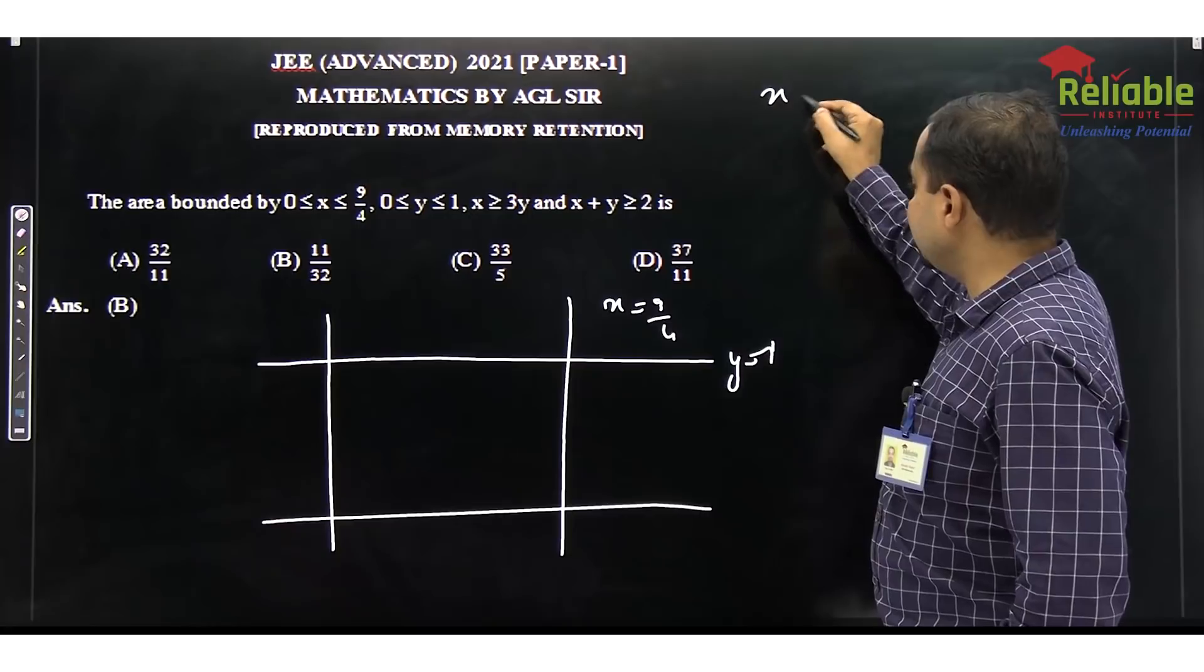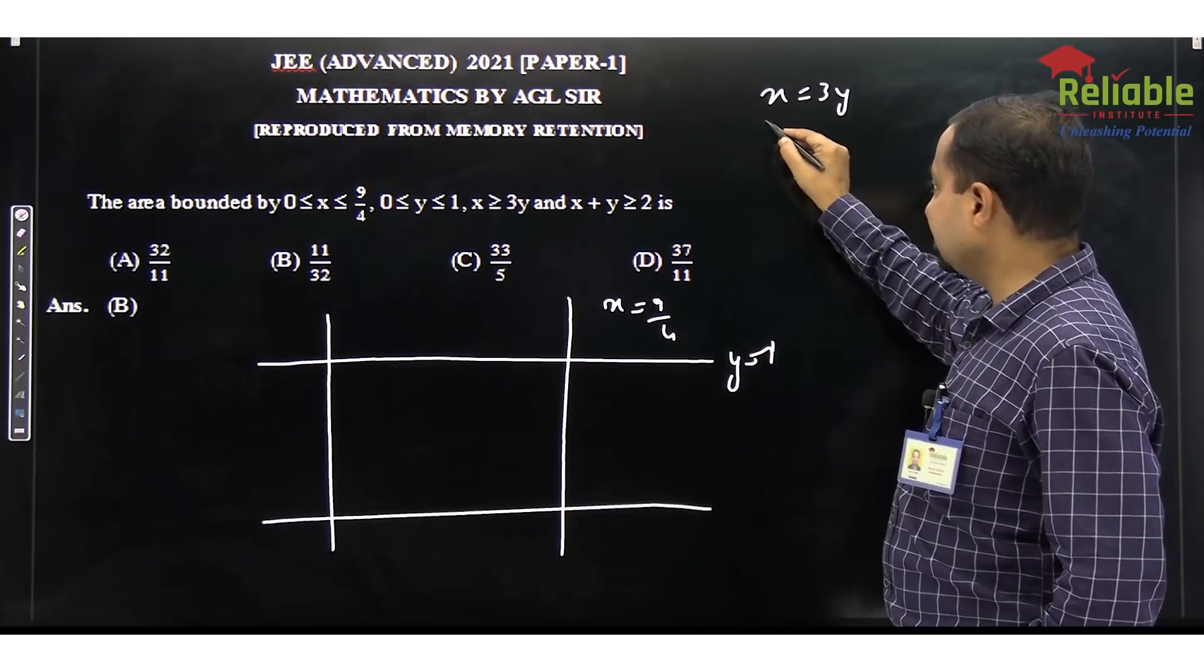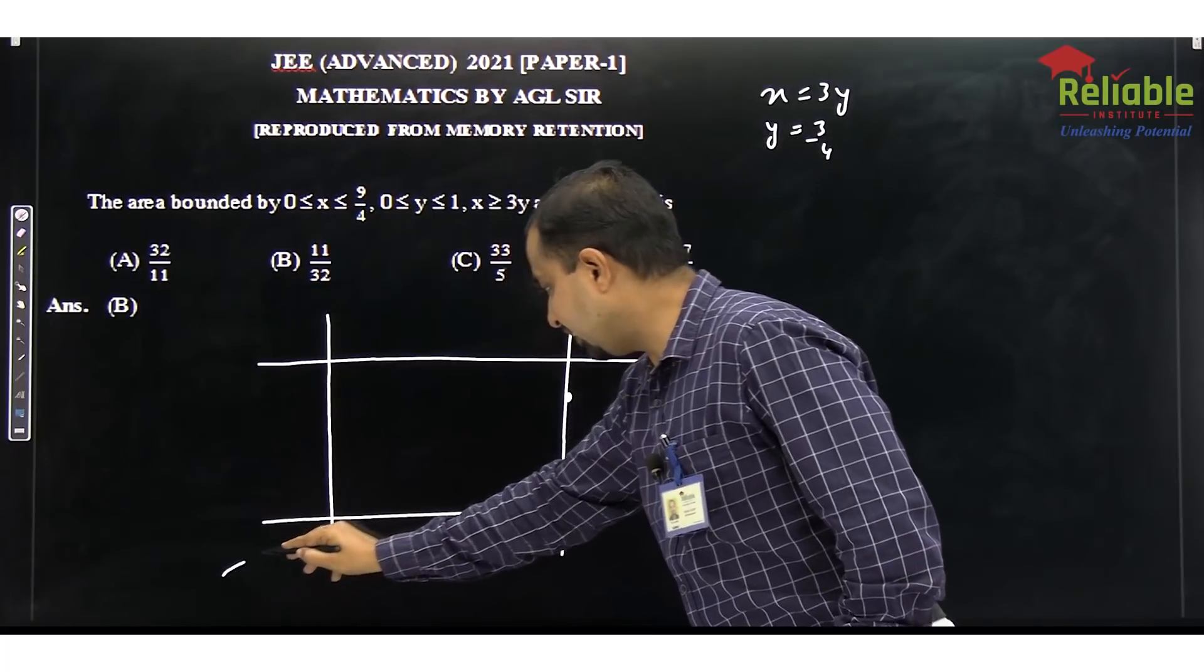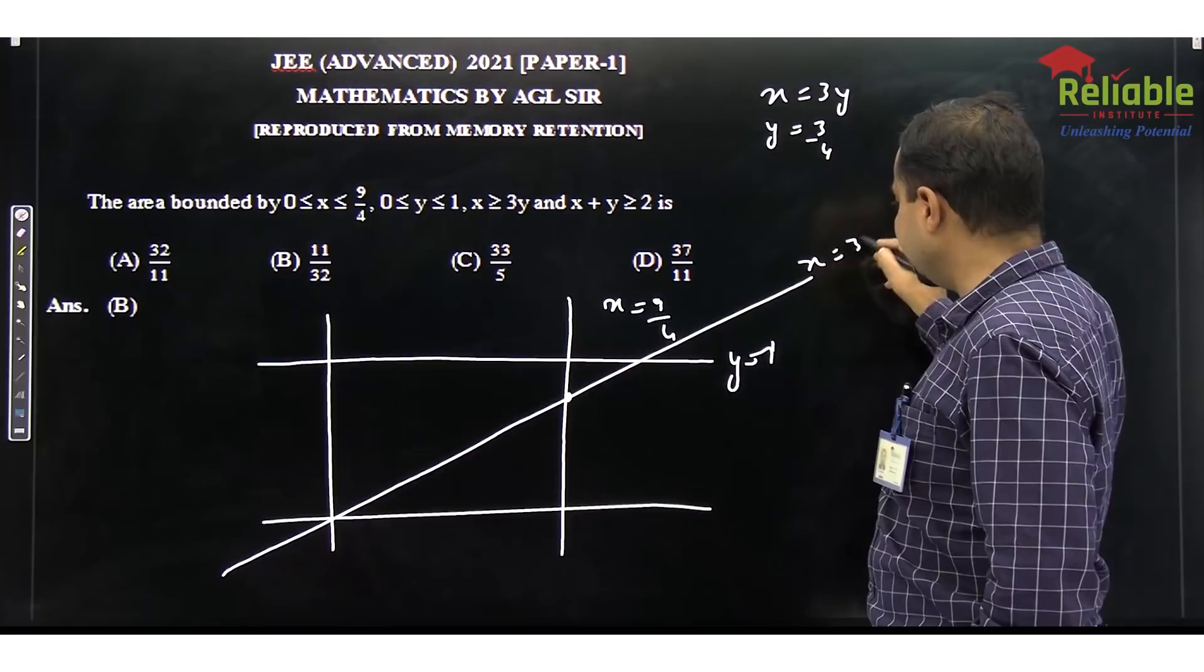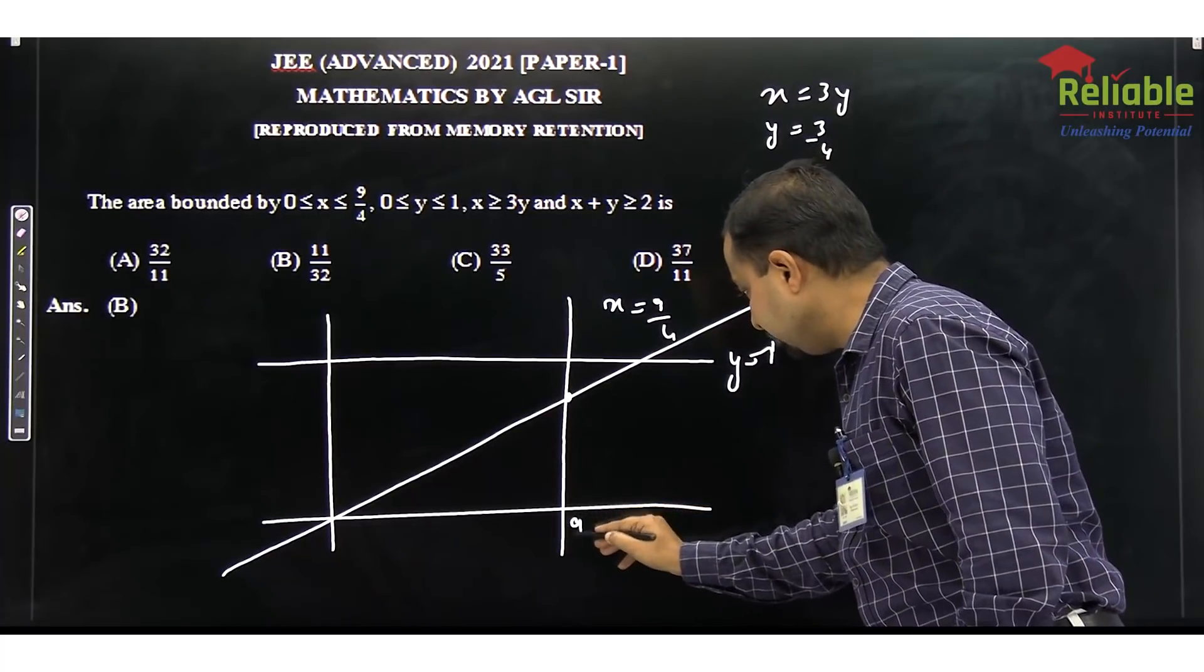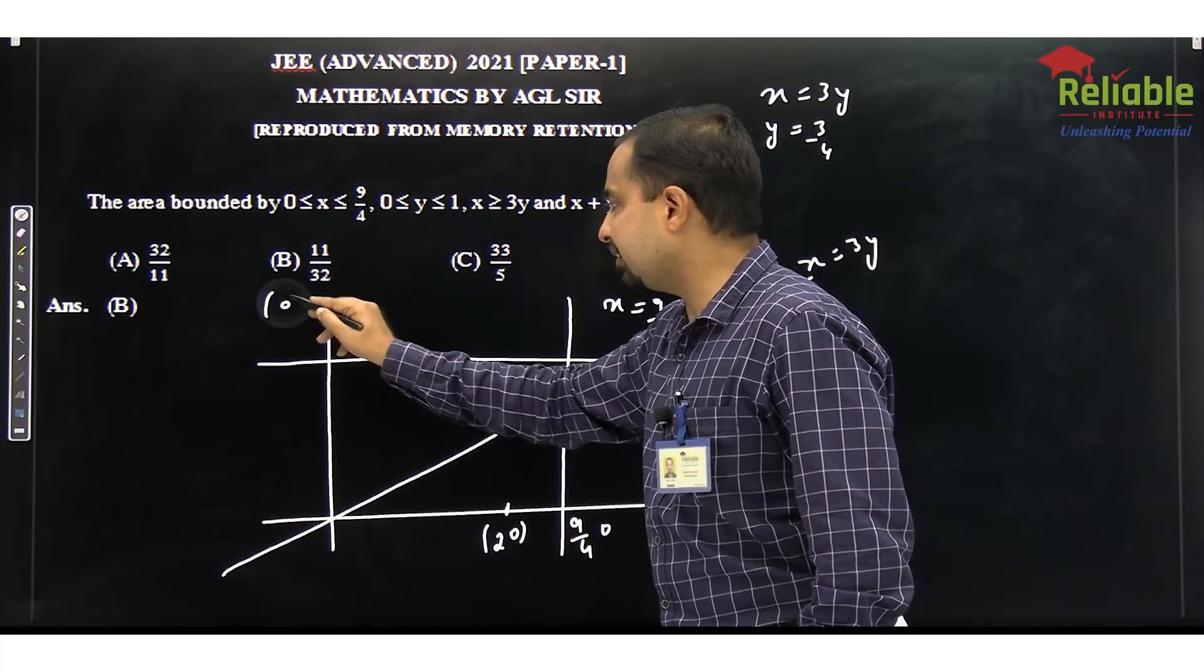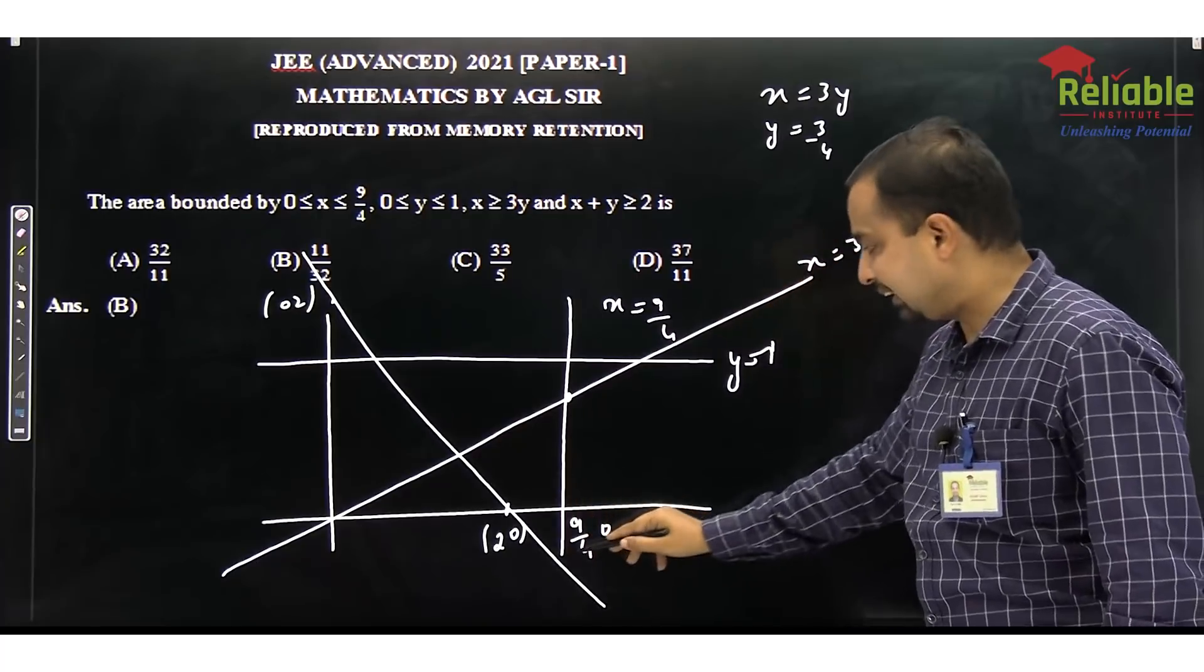We will do x equals 3y. If x equals 3y, we will solve this with a vertical line. So y will be 3 by 4. The obvious thing is x equals 3y. This is our line. And one line is x plus y equals 2. Since this point is 9 by 4, 0 is 9 by 4, 0. So 2 will remain here. And 0, 2 is going to be somewhere here. If we make this straight line, then this line will be like this.